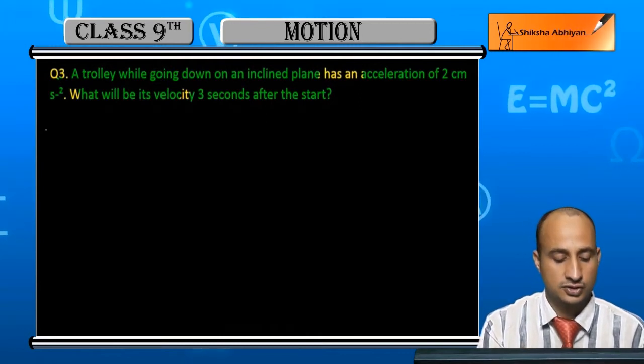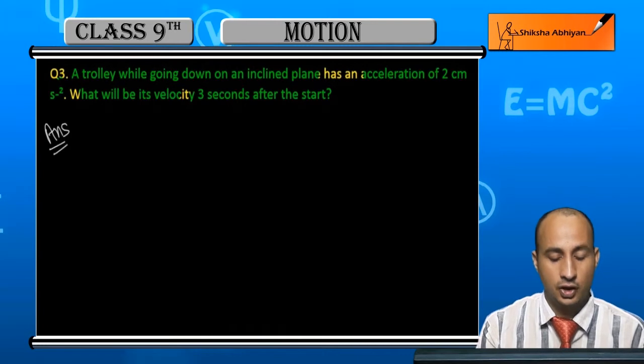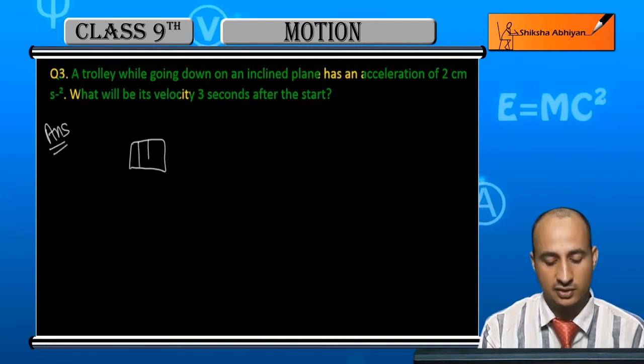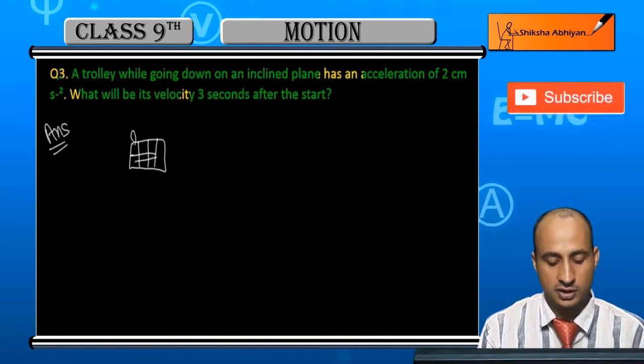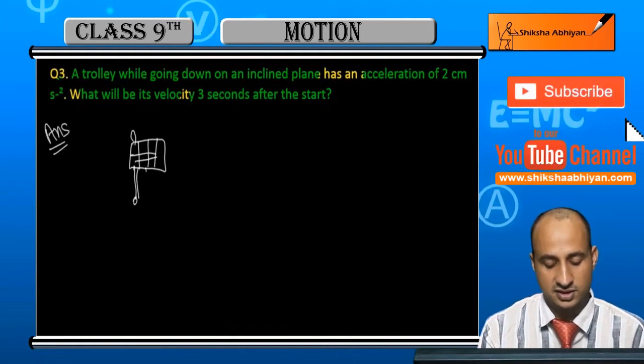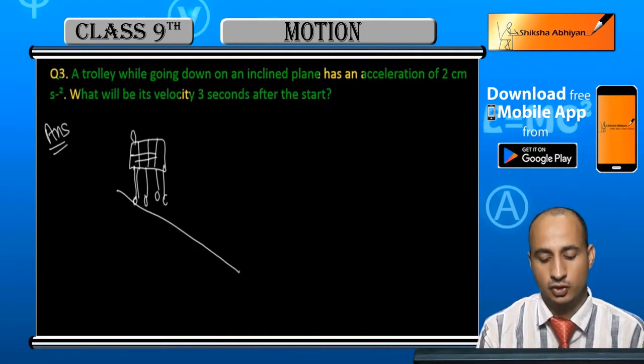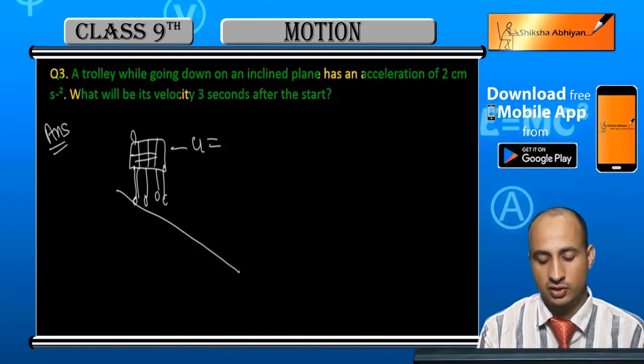Student, leave the trolley here. When the trolley is left, this is a trolley. And the trolley is left here. In the inclined plane, it is left here. Now, when it is left here, U is equal to 0.